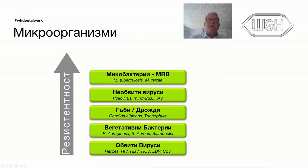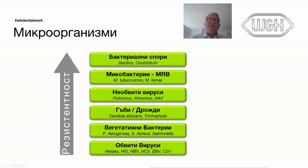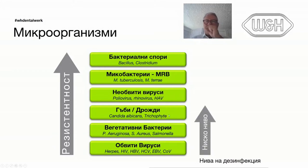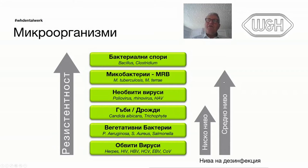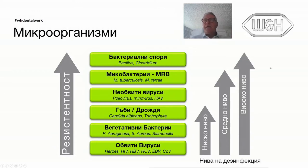When we talk about disinfection, we recognize three levels of performance. Low-level disinfection includes the first three families. Then we have intermediate-level disinfection — I'll come back to this when we talk about pre-disinfection of dental instruments. And what is sometimes called cold sterilization is high-level disinfection, which includes all these families.